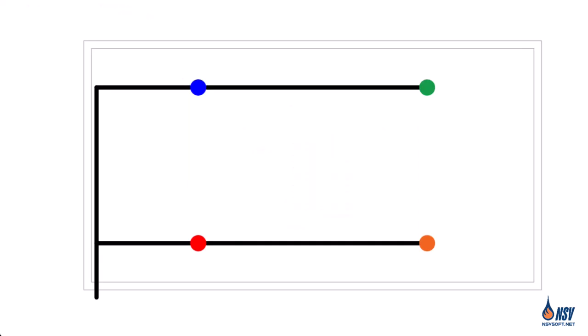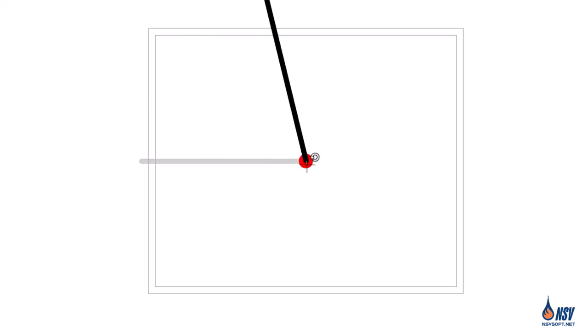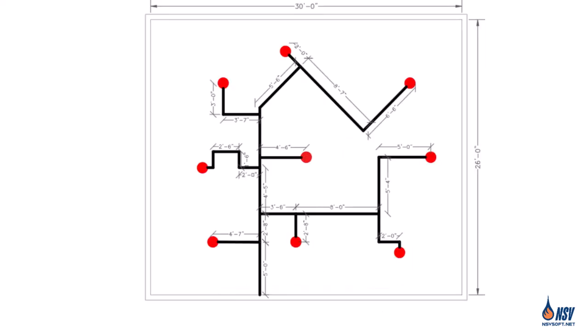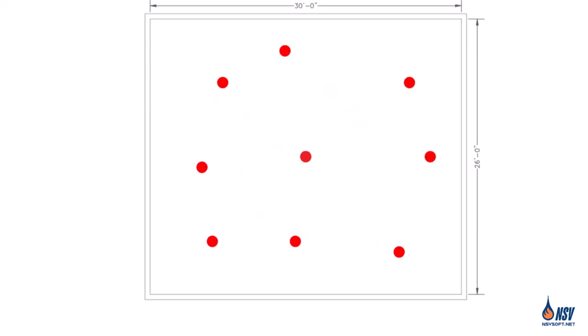Before introducing the sketch-based method, let's take a moment to review the S by L approach again. The intent of NFPA 13 in defining directions along the branch line and between branch lines is to establish two perpendicular reference axes. As we all know, the orientation of the piping does not influence the sprinkler coverage area. Therefore, in the sketch-based method, the piping network is ignored, allowing us to focus solely on the sprinkler positioning and coverage.